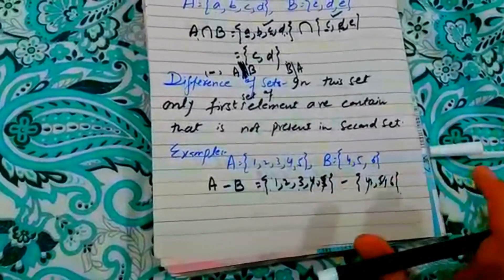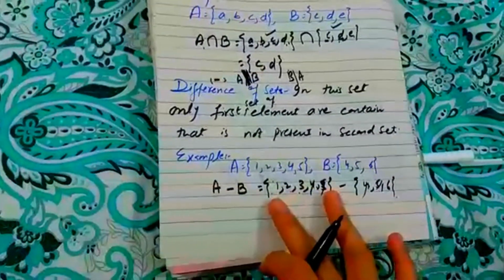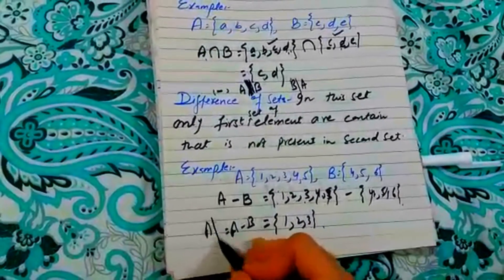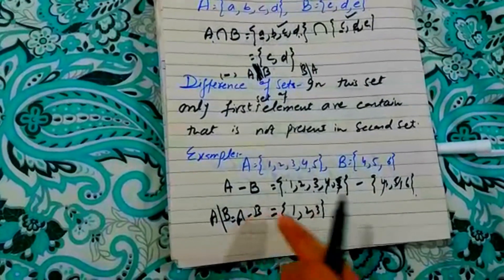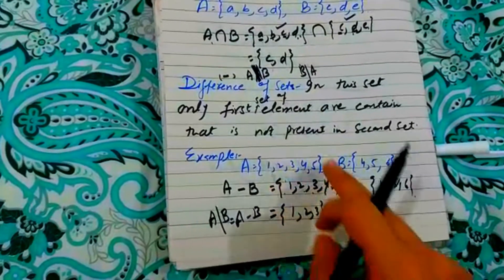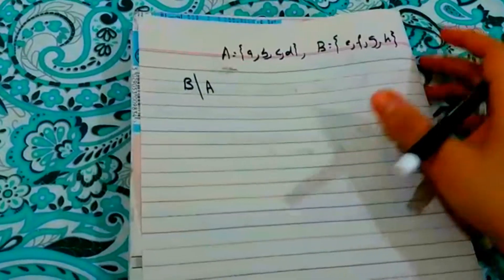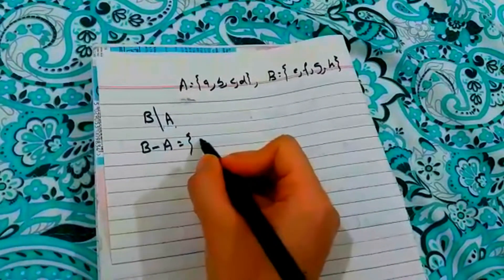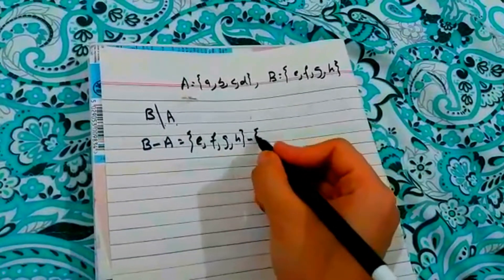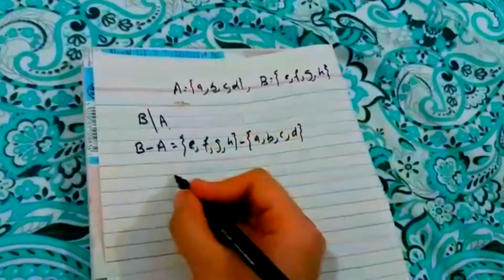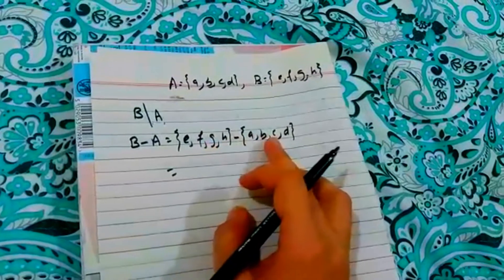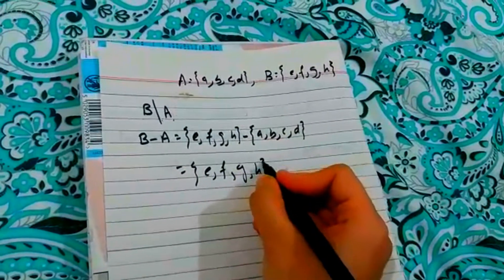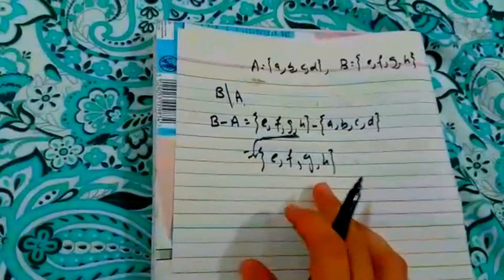The second set has no element, so there will be no problem. The first set has elements one, two, and three — so this has a difference. A minus B means the first set is just written as is. For B minus A: first write B as {F, D, H}, then A as {B, C, D}. Here D is cut. So all remaining elements of the first set are written — this is B minus A.